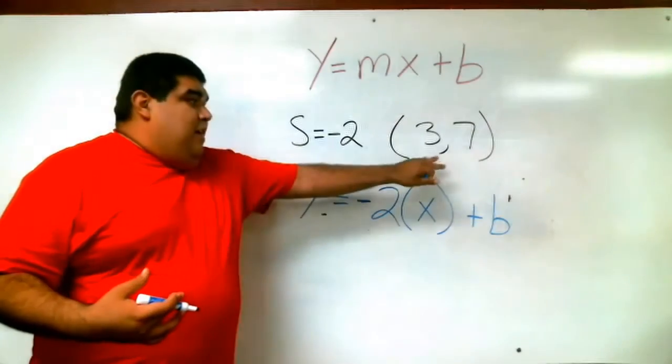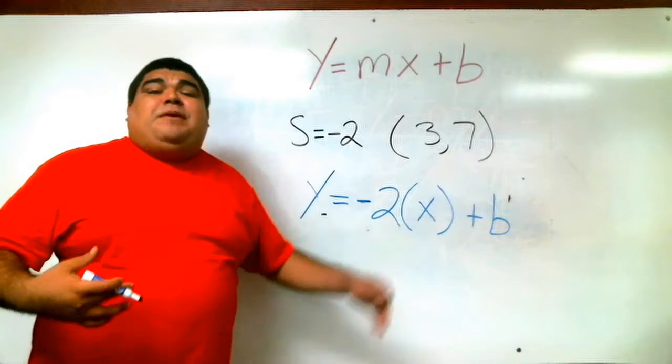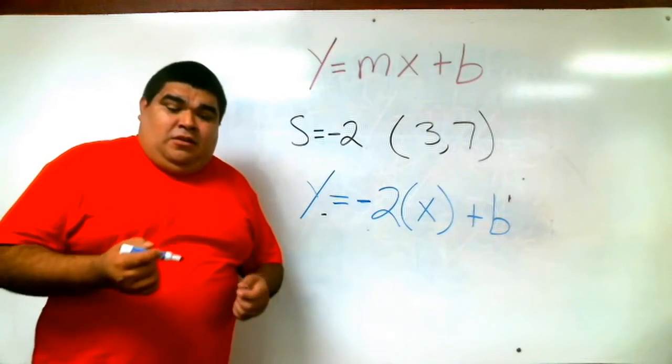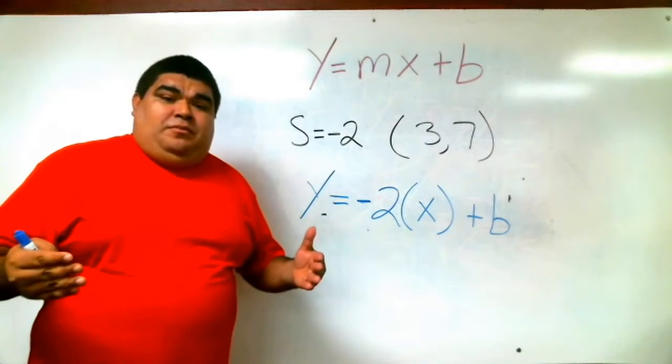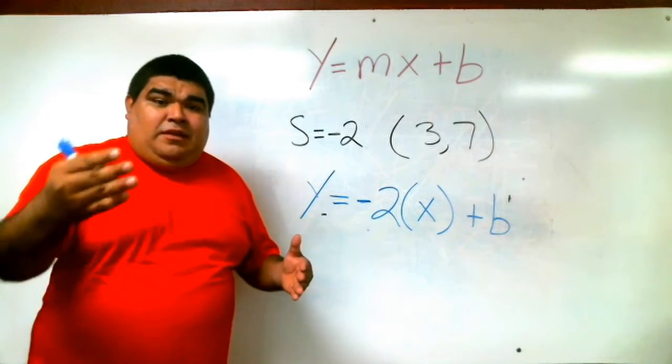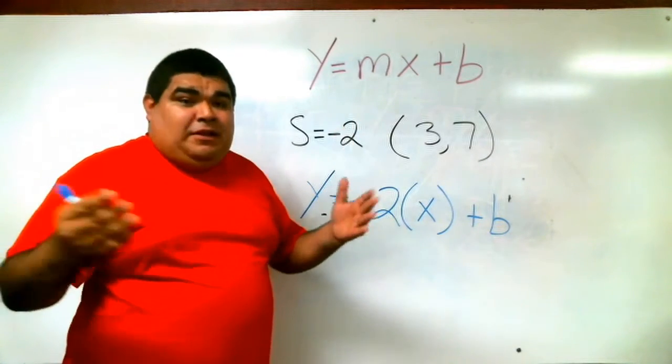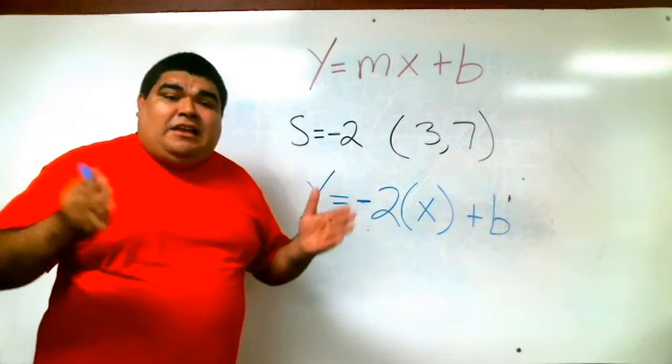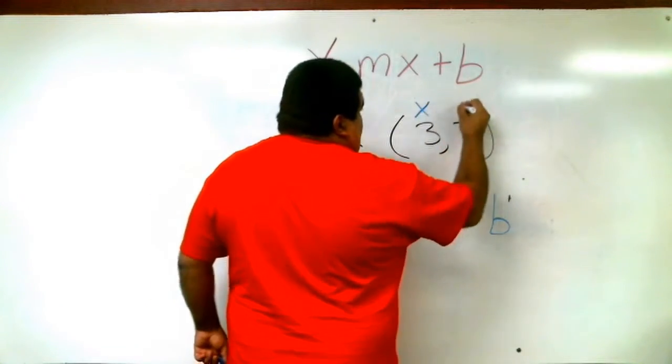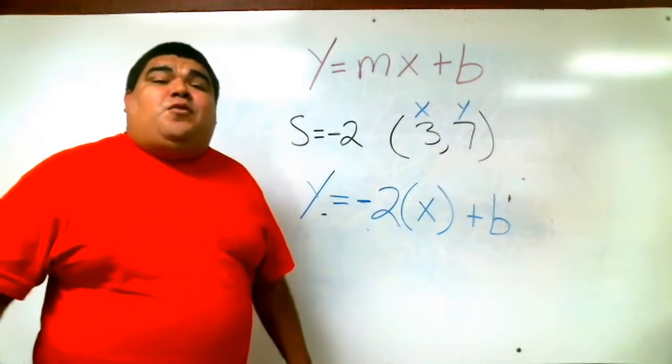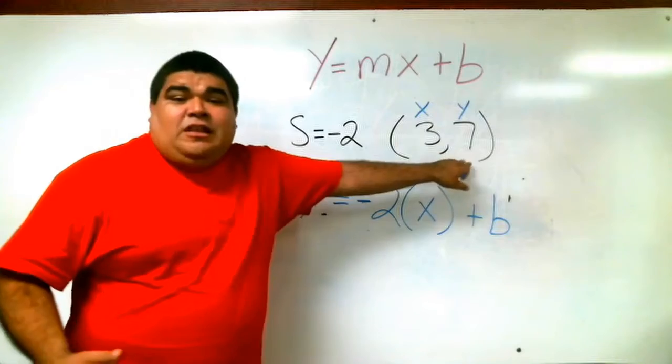Notice that, remember, we have this coordinate, this point it passes through the line. What is the thing we always have to do first? Label it, right? We have to label it, make sure we don't mistake the x and the y. We have x, the first one, then y, because x comes before y in the alphabet. So it goes first, then y.